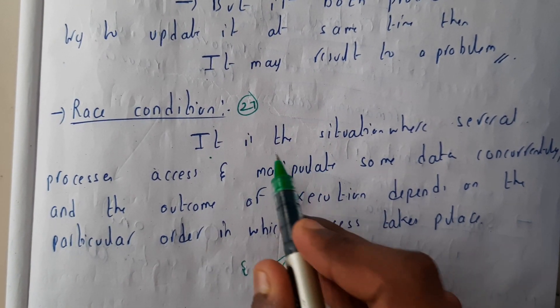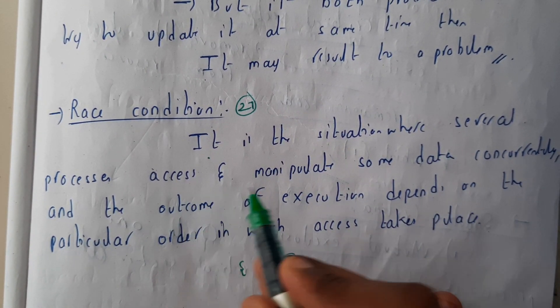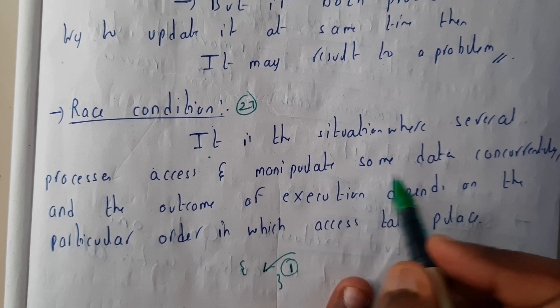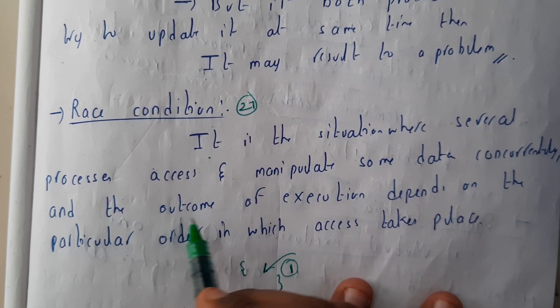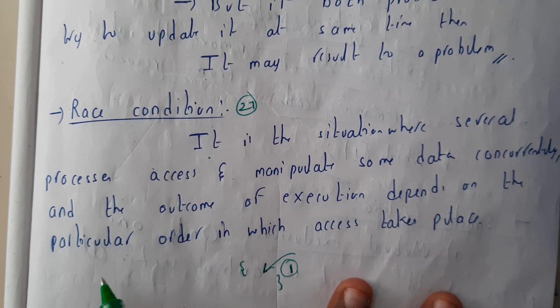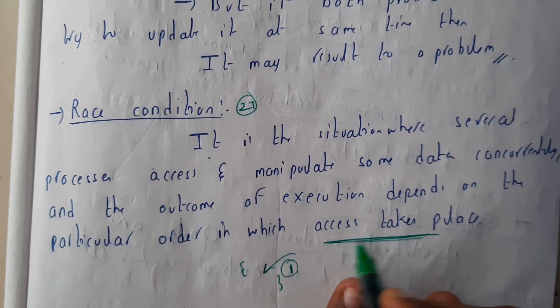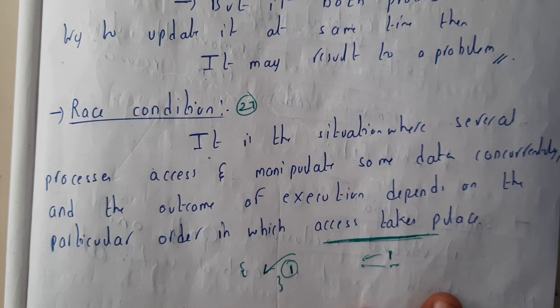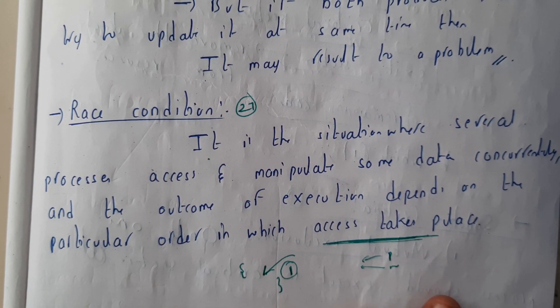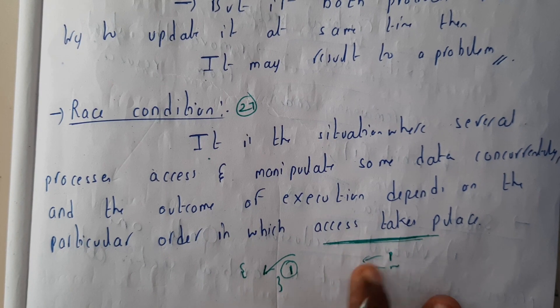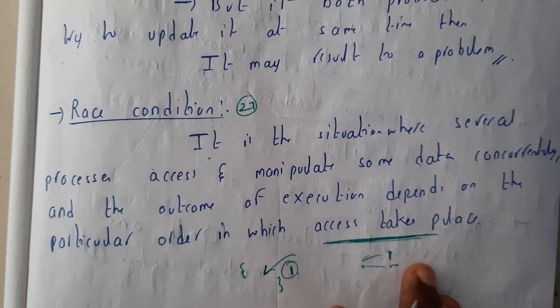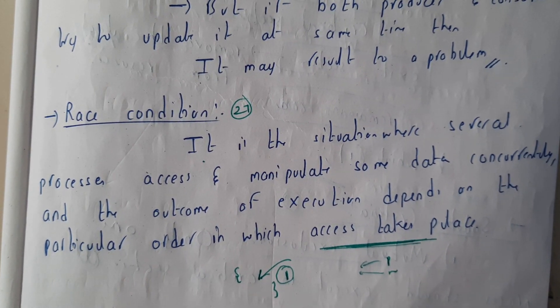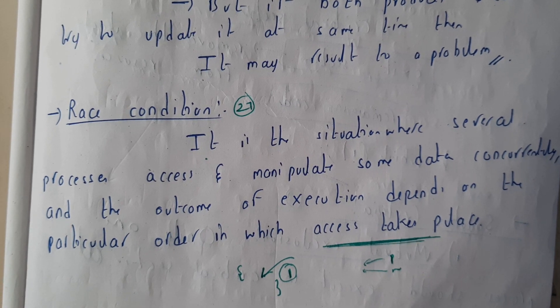It is the situation where several processes access and manipulate some data concurrently, and the outcome of execution depends on the particular order in which the access takes place. If there are some processes P1, P2, P3 trying to enter at the same time, there should be something that takes into account that first this came, second this came, third this came. According to that order we should be doing it.